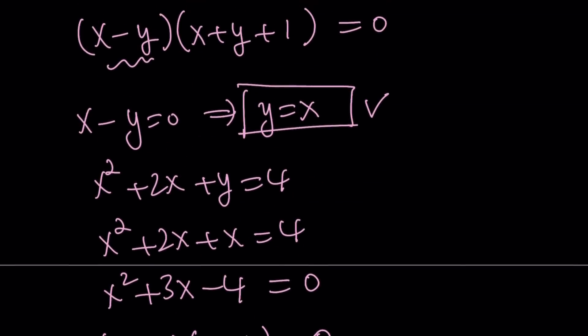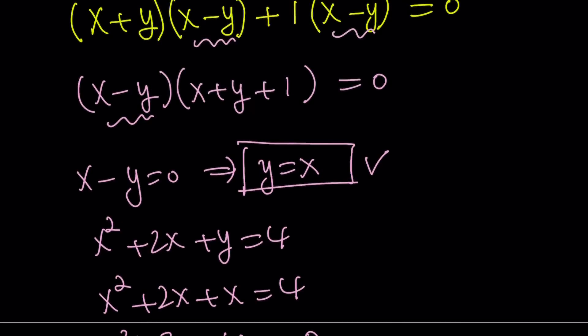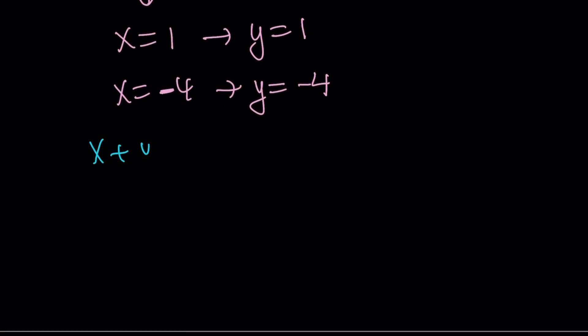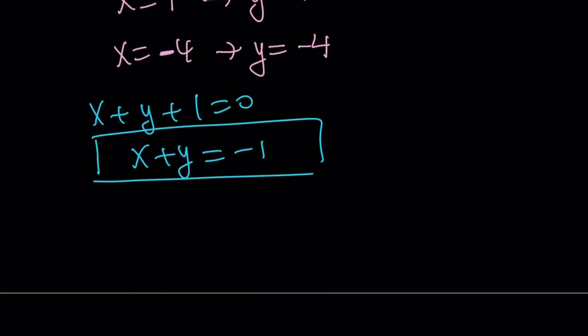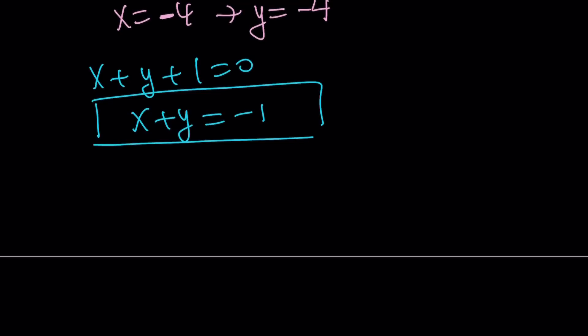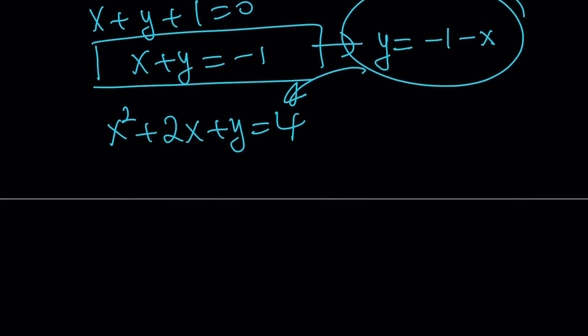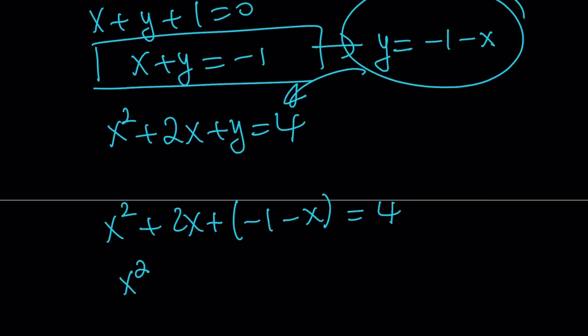Now let's take a look at the second case. The second case comes from the other factor. x plus y plus 1 is equal to 0. If x plus y plus 1 is equal to 0, this means x plus y is equal to negative 1. So this is another equation that I should be using. And if you substitute that into one of the equations, I'm going to use the top one. x squared plus 2x plus y is equal to 4. From here, I can isolate y and write it as negative 1 minus x. And I can substitute that into my equation. x squared plus 2x plus y, which is negative 1 minus x equals 4. And then we get x squared plus 2x minus x, that's going to give me plus x. Minus 1 minus 4 is going to give me minus 5. And we get the same equation.